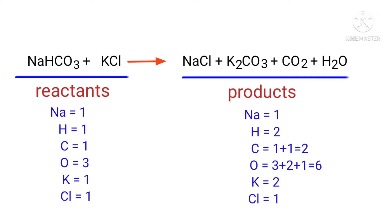If you look at this equation, the equation is not balanced. In the reactants side there are one sodium atom, one hydrogen atom, one carbon atom, three oxygen atoms, one potassium atom and one chlorine atom present. On the products side there are one sodium atom, two hydrogen atoms, two carbon atoms, six oxygen atoms, two potassium atoms and one chlorine atom present.